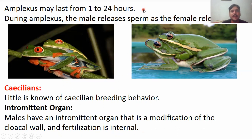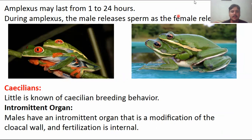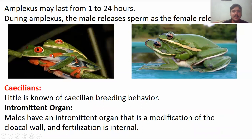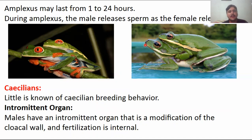Intermittent organs are modifications used for internal fertilization. This concludes today's topic, which includes amplexus lasting one to 24 hours until the female is ready. Thank you very much, Allah Hafiz. Inshallah, next lecture we will continue.